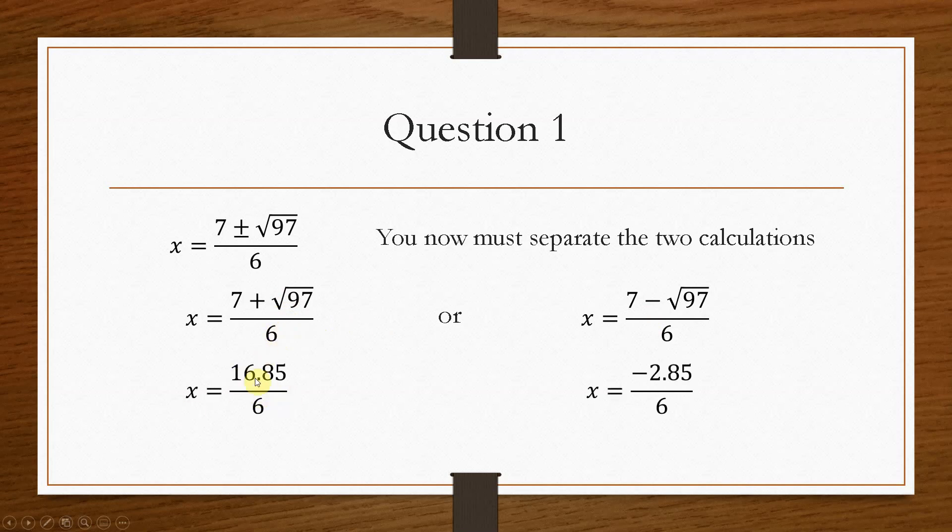And then you would get 16.85 and minus 2.85 divided by 6, which gives you your final answer of 2.81 and minus 0.47.